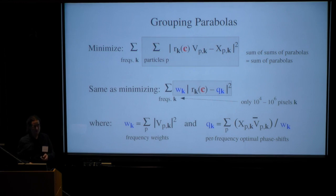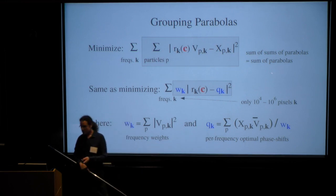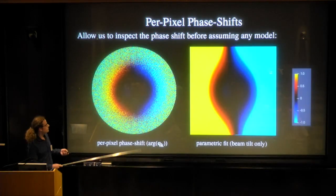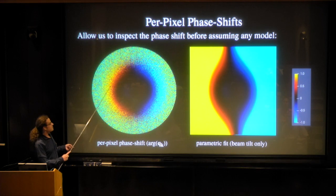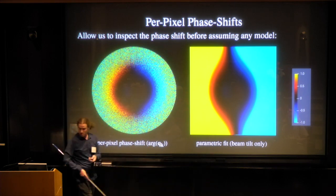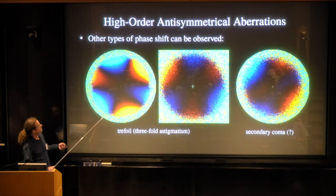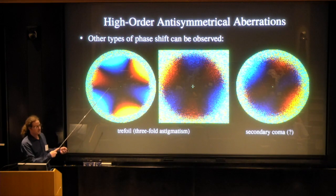But more important than making the problem tractable this way, is we can also inspect the per-pixel optimal phase shifts. So these q are again numbers in the complex plane, somewhere close to the unit circle. And when we look at their phase angles, we usually see the signature of a beam tilt. That is a positive phase shift on one end and a negative one on the other, and the cubic growth in between. But in some cases, we actually see more interesting things, like these trefoil aberrations. This is the most extreme case, and we'll be looking at that a little more.